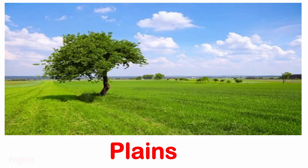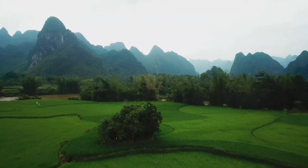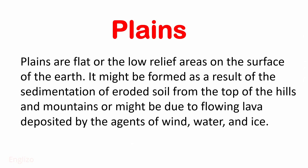Plains are flat or low relief areas on the surface of the earth. They might be formed as a result of the sedimentation of eroded soil from the top of hills and mountains, or might be due to flowing lava deposited by agents of wind, water, and ice.